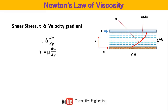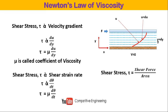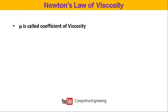Newton's law of viscosity states that shear stress is proportional to the velocity gradient: tau is proportional to du/dy. Using the constant mu (called the coefficient of viscosity), we write tau equals mu times du/dy. Equivalently, shear stress is proportional to shear strain rate: tau equals mu times d-theta by dt. Shear stress can also be written as shear force divided by area, allowing us to compute the shear force from these equations.